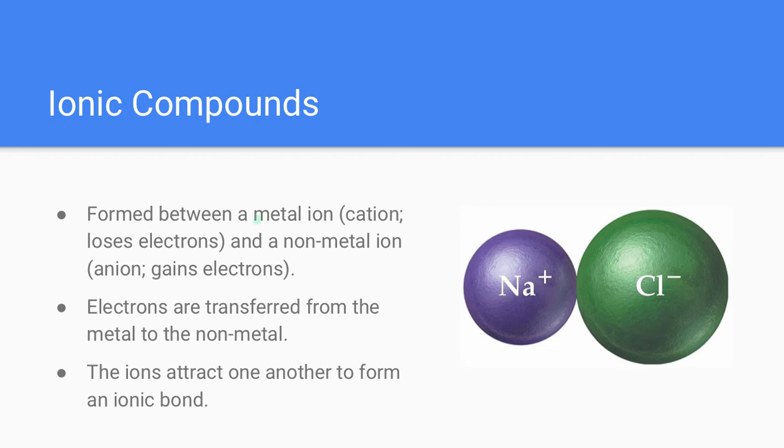Ionic compounds are formed between a metal, which is known as a cation, something that loses electrons, along with a non-metal, or an anion, which is something that gains electrons.